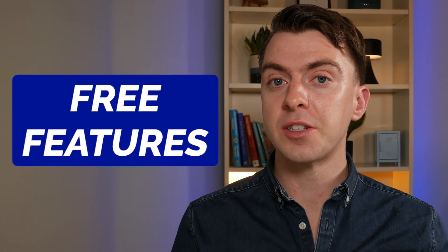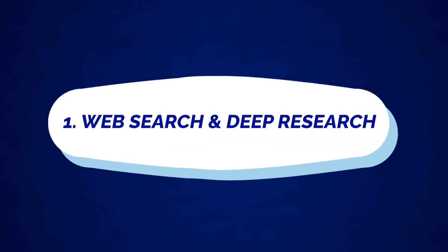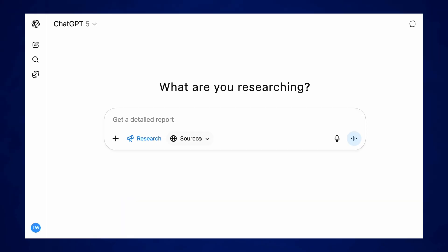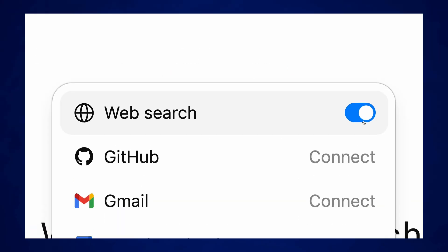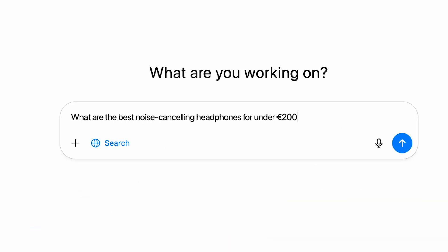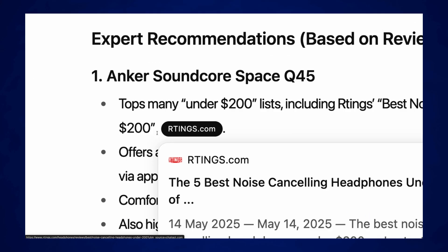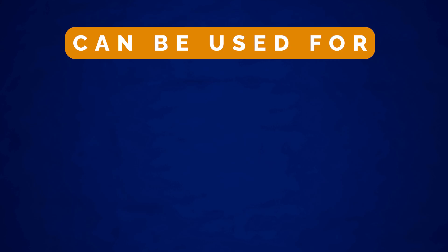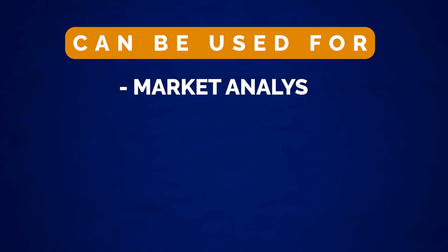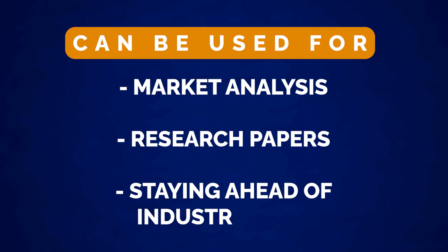Let's start with the free features that come with ChatGPT. Number one is web search and deep research. This means no more juggling between loads of different tabs. You can ask any question and get live sources and citations. This is great for market analysis, research papers, or just staying ahead of industry news and trends.